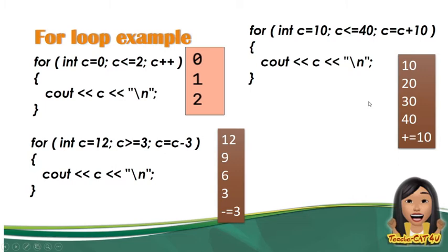Ngayon ang question: paano kapag pababa yung value? Let's say, for example, pababa yung value — kagaya nitong sample: 12, 9, 6, 3. Ibig sabihin nun, pababa — nagbabawas siya. Ibig sabihin, decrement — minus yan. Kung titignan din ninyo yung program, ma-i-identify ninyo na nagma-minus siya ng 3. So, 12 minus 3 is 9, 9 minus 3 is 6, 6 minus 3 is 3. Nagde-decrement siya ng 3. Kaya, 3 ang decrement natin.